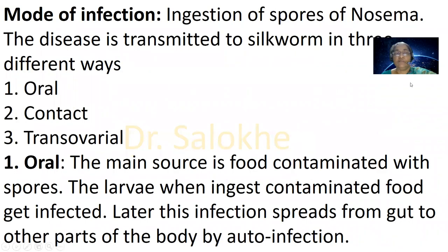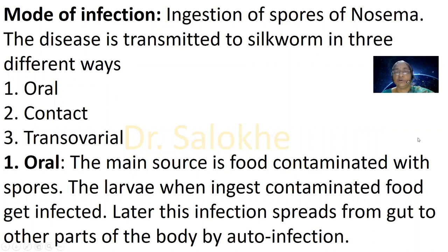The mode of infection of this disease is ingestion of spores of Nosema. The disease is transmitted to silkworm in three different ways: oral, contact, and transovarial. In oral transmission, the main source is food contaminated with spores. The larvae, when they ingest contaminated food, get infected. Later, this infection spreads from the gut to other parts of the body by auto-infection.